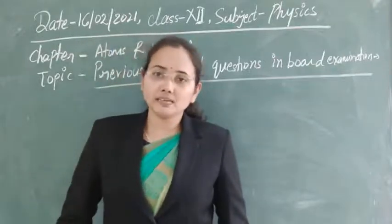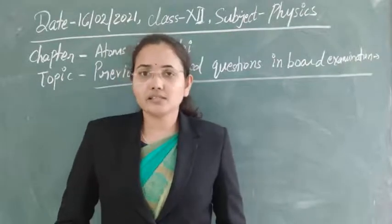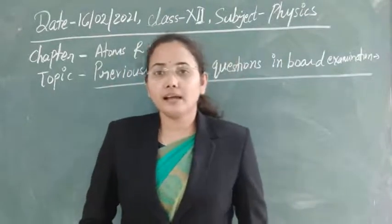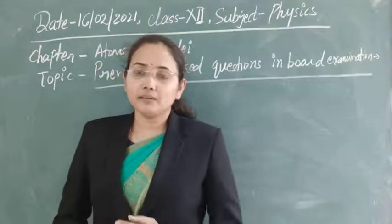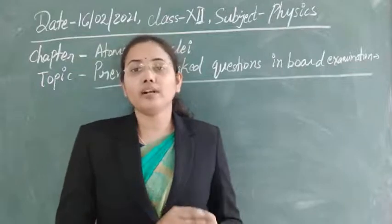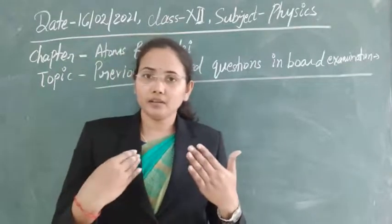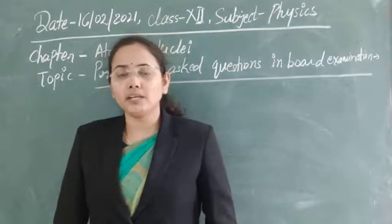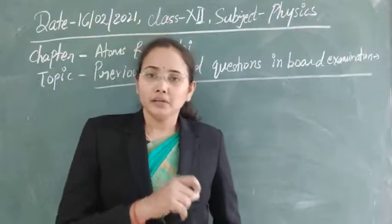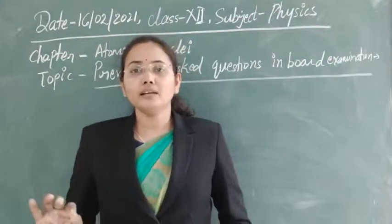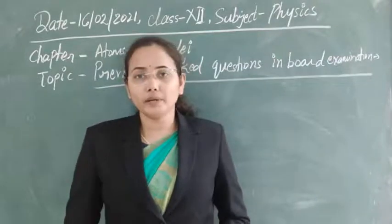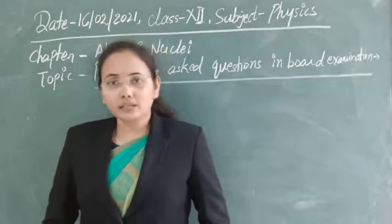We have not yet discussed the energy level diagram for the characteristic X-ray spectrum, so let us discuss that first. Then we will solve some conceptual and numerical problems today. X-rays are produced whenever an accelerated electron collides with an electron in the inner core of an atom, and if the collision is head-on, the incident electron transfers its whole energy to that core electron, removing it from its orbit.